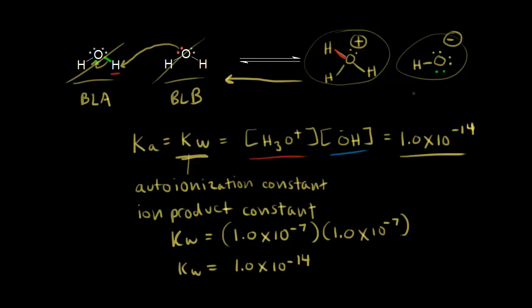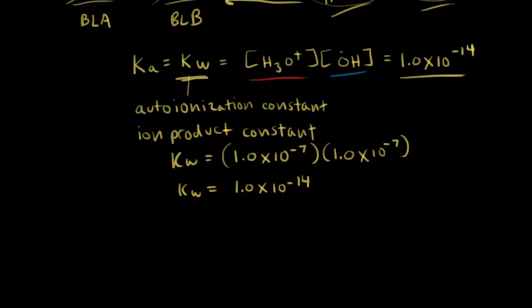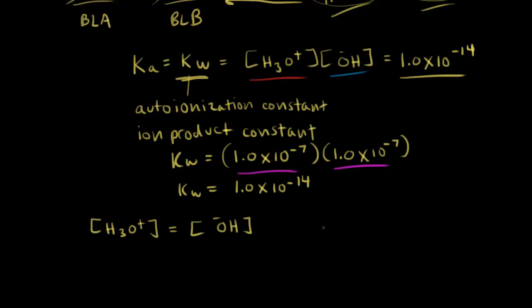So this is the autoionization of water. Now let's think about the concentration of hydronium compared to the concentration of hydroxide. For this example they're exactly the same — the concentration of hydronium equals the concentration of hydroxide. When that happens, we say we're dealing with something that's neutral. Pure H₂O is neutral, and we use that as a comparison.